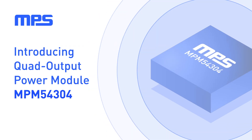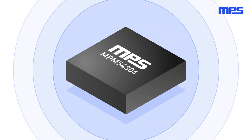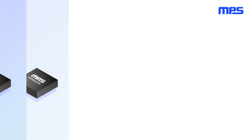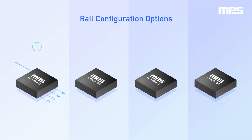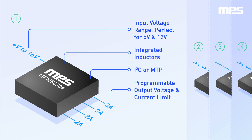The MPM54304 is a complete quad output power module that integrates four high efficiency step-down DC to DC converters and inductors, with up to four rail configuration options. The MPM54304 operates across a 4V to 16V input voltage range and supports an output voltage up to 7 volts with up to 3 amps per output for channels 1 and 2.